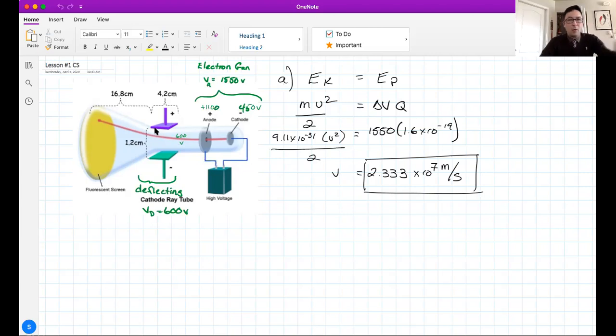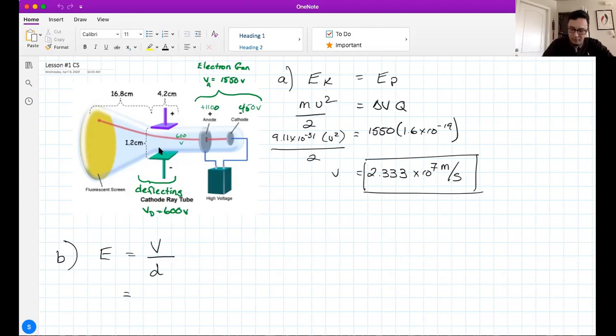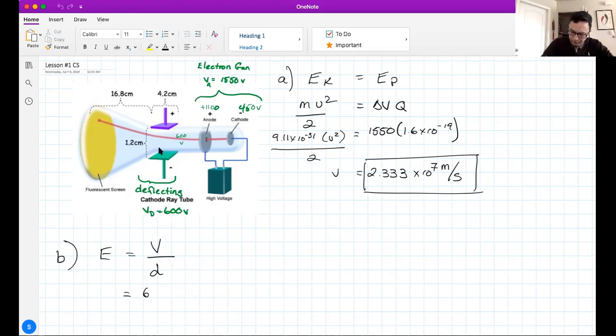Part B of the question says find the electric field strength between the vertical deflecting plates. Here's the vertical deflecting plates. We can find the electric field strength by using the equation for deflecting plates. That equation is E equals the voltage between the plates divided by the distance separating plates.